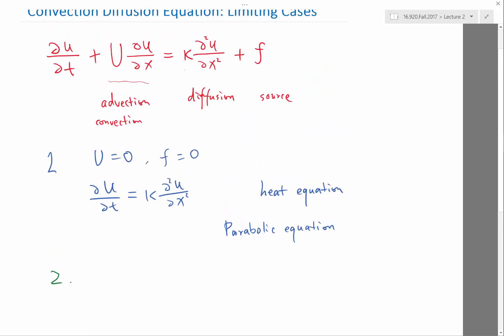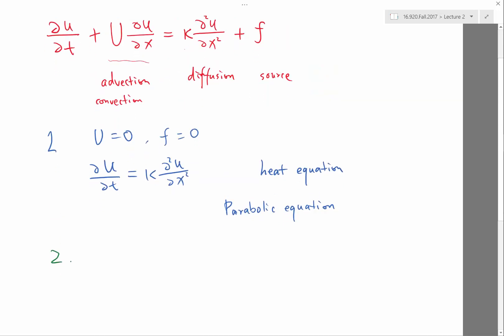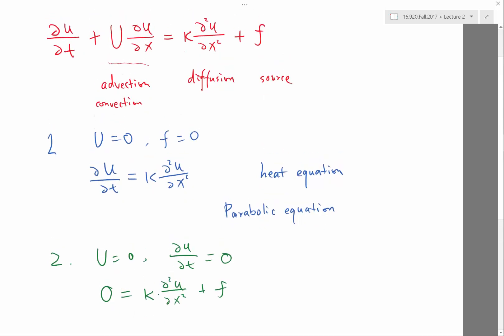The reason why it is called a parabolic equation almost doesn't matter here. If you study theoretical PDEs in the math department, they will tell you a very good explanation. Let's just remember it's called a parabolic equation. The second special case we're looking at is when both U equals zero and du dt equals zero. What you'll get is the whole left-hand side is zero, so zero equals kappa times du squared dx squared. But f in this case may not be zero.